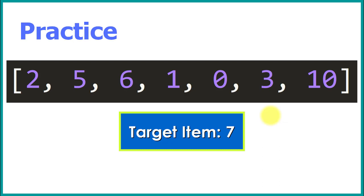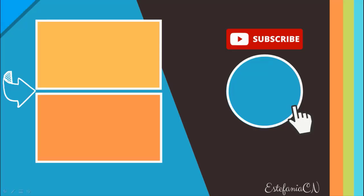If you want some additional practice, try applying this algorithm to this sequence to find the target item seven. You'll notice that seven is not in the sequence, so the result should be minus one. Work through the different steps and see how the algorithm proceeds. Share your thoughts and results in the comments, and if you liked this video, subscribe to my channel and check out my other videos.